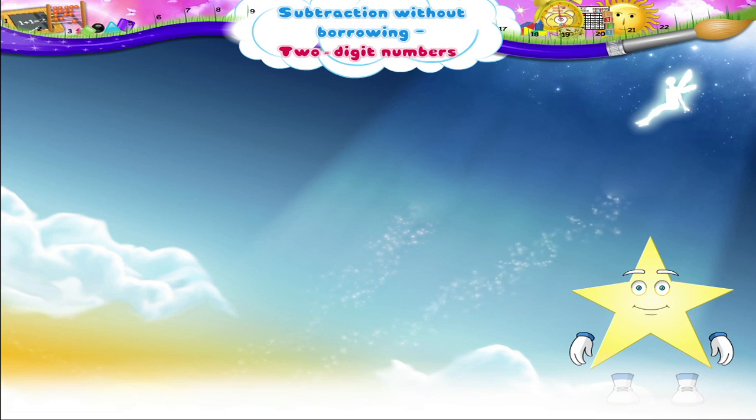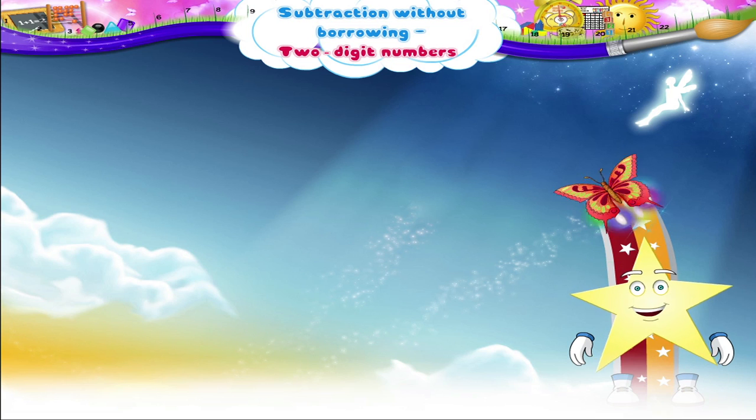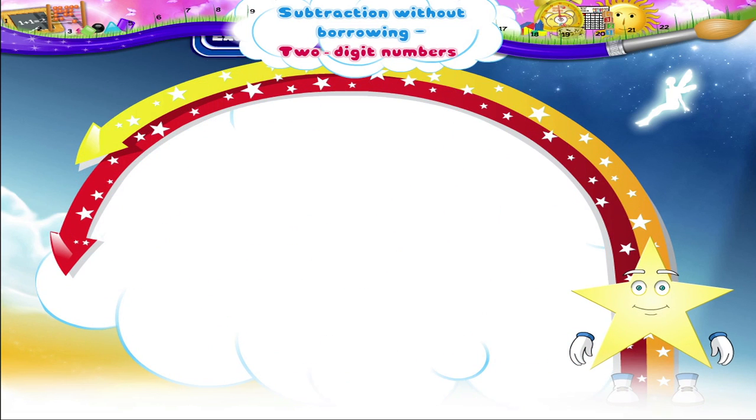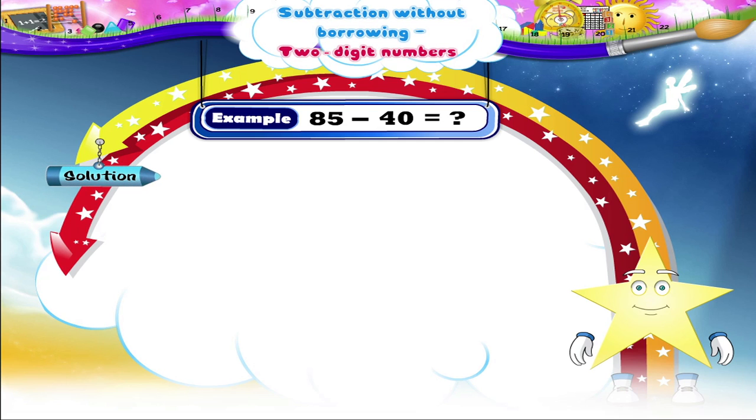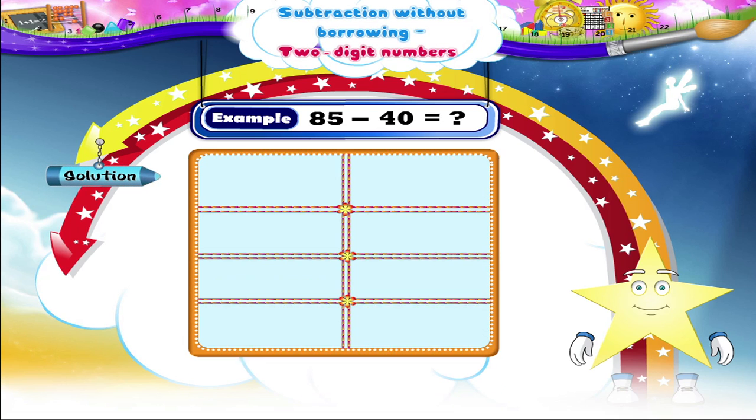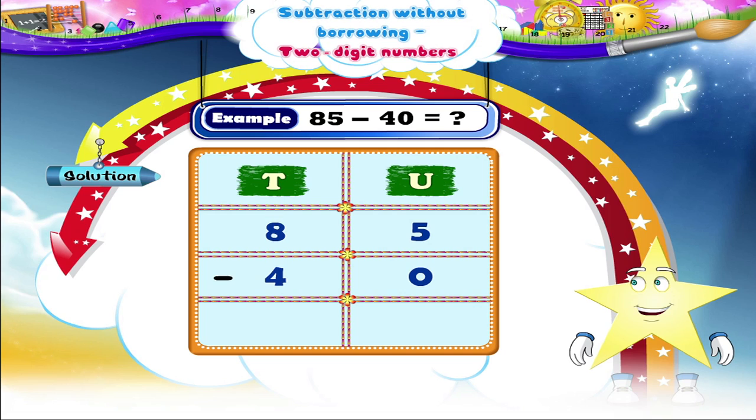Do you want some more examples, Starry? Okay. Then, subtract 40 from 85. Here again, we shall first arrange the numbers vertically. Now, we subtract the digits in the units place.